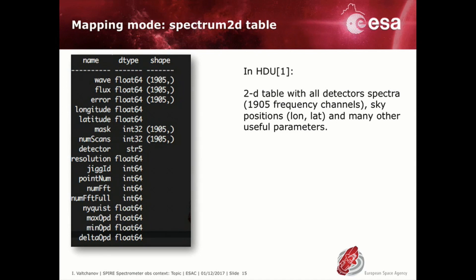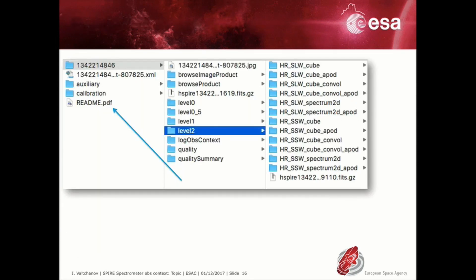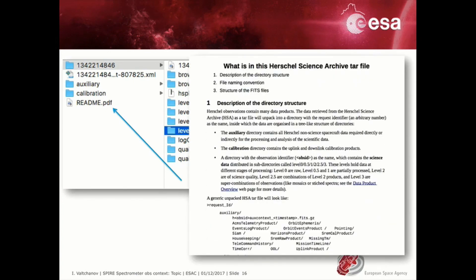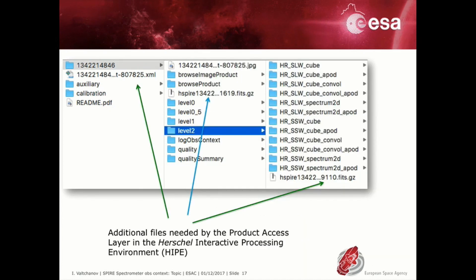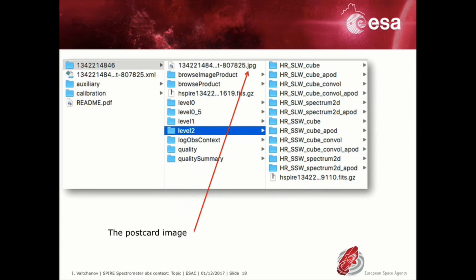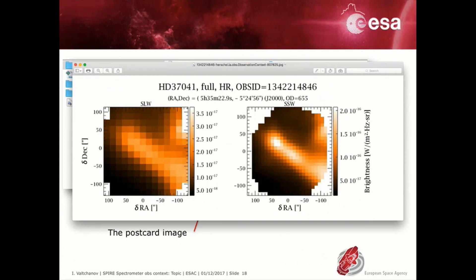Note that the individual spectra as well as the hyperspectral cubes are science ready products. A README file at the uppermost level explains the content of the TAR archive file from the Herschel Science Centre. You may notice that there are some additional files in the subfolders. XML and FITS files. These are special files used by the Herschel Interactive Processing Environment. And the postcard figure, also known as the browse image, is available within the Observational Context folder.